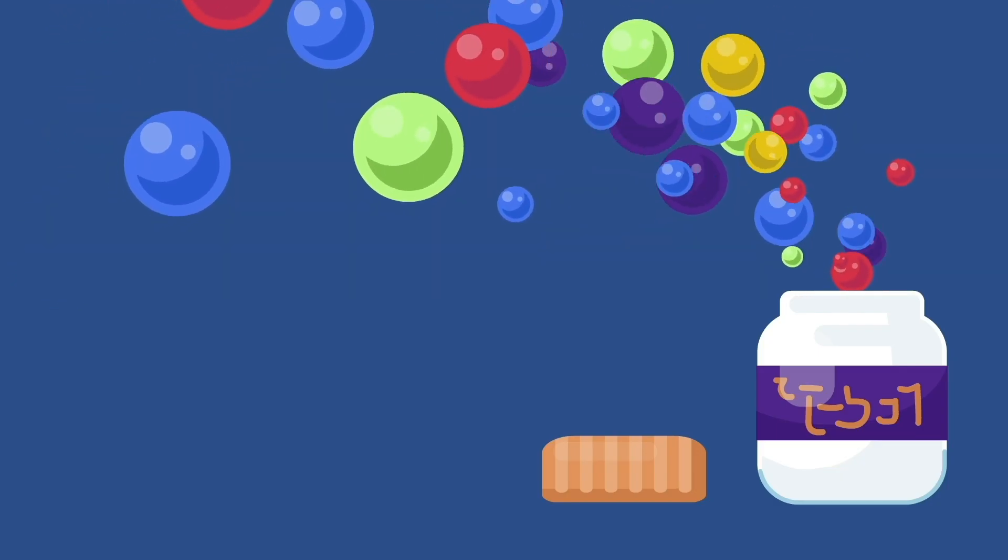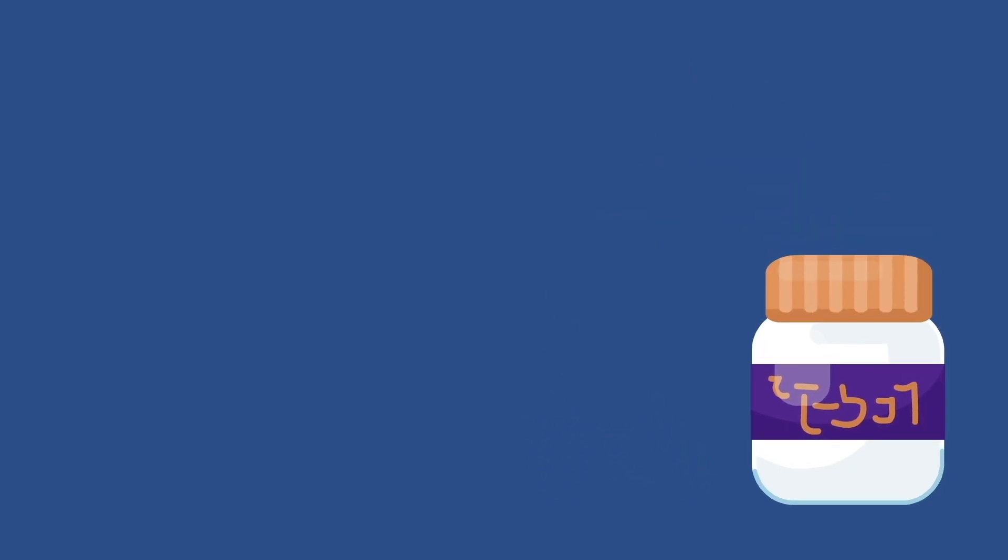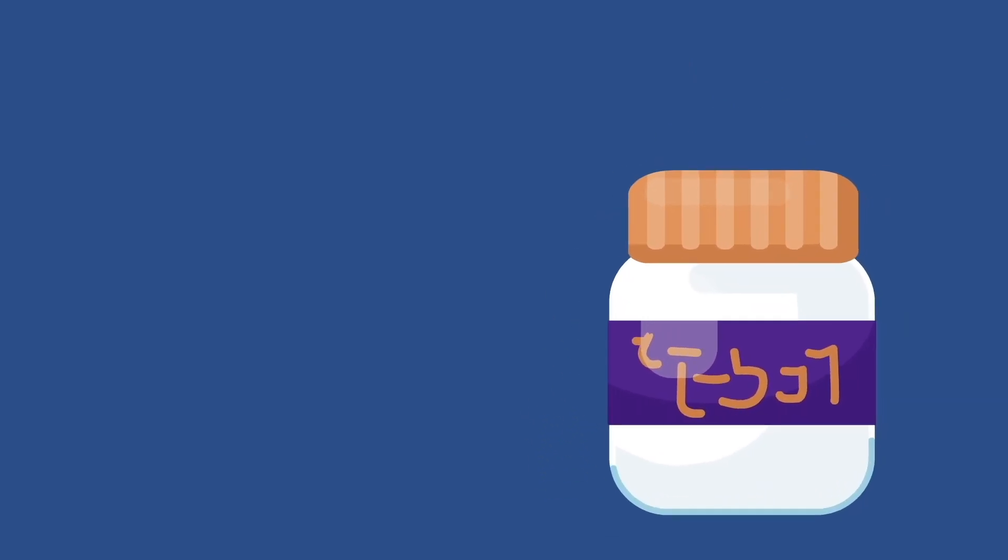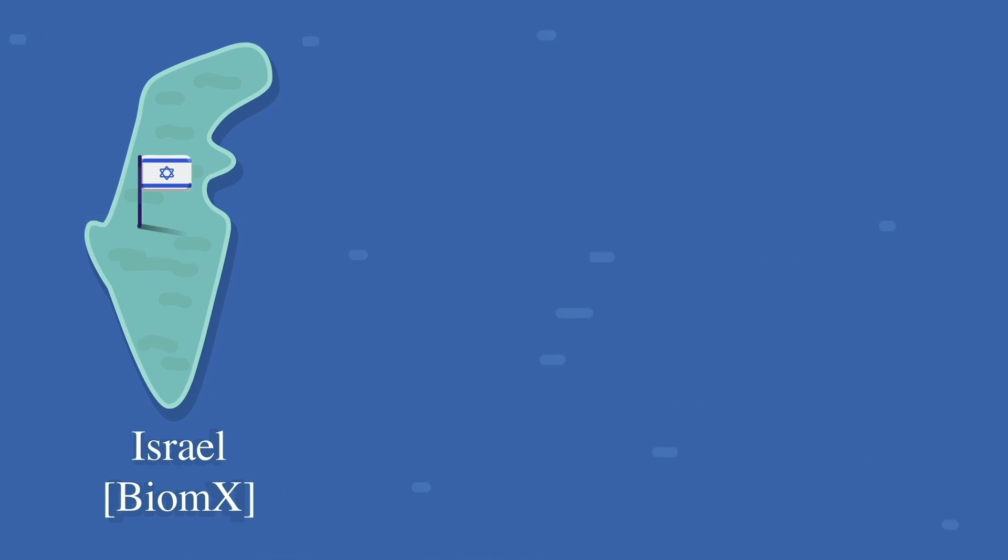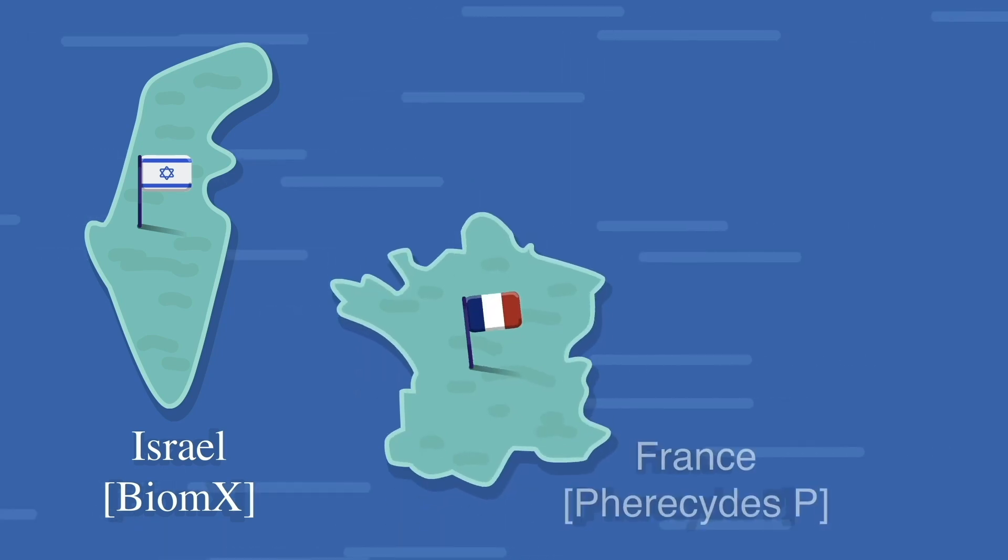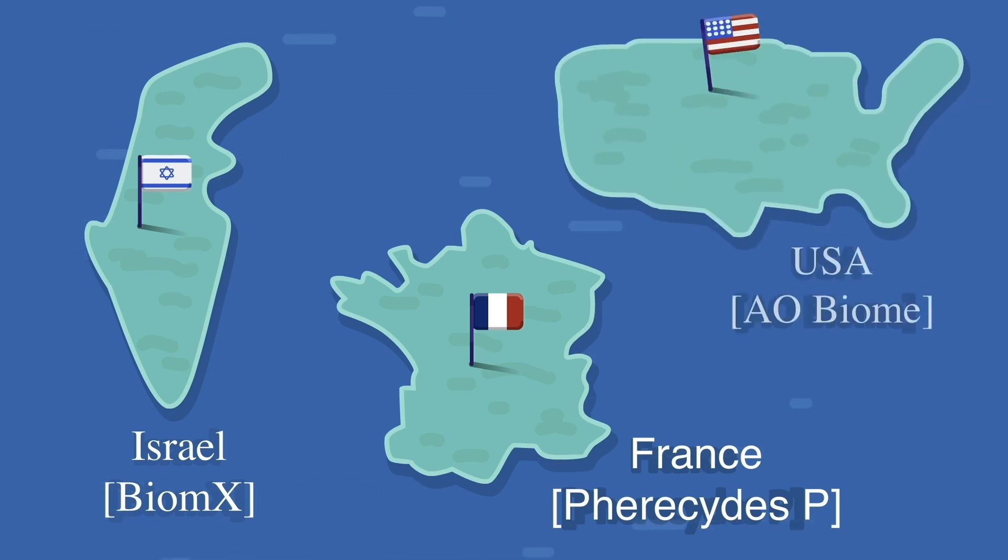Microbes themselves can be the medicine. For example, phages are viruses that prey on bacteria and are thought to shape the populations of bacteria on your skin. Biomex is a company based in Israel that's developing a phage-based product that targets the bacteria linked to acne. Pherecydes Pharma, a company based in France, is using phages to target the skin bacteria involved in diabetic foot ulcer infections. An American company is developing a strain of live bacteria to treat eczema. This company also invented a bacteria spray that contains live bacteria found in dirt and untreated water that is meant to restore balance in the skin ecosystem.